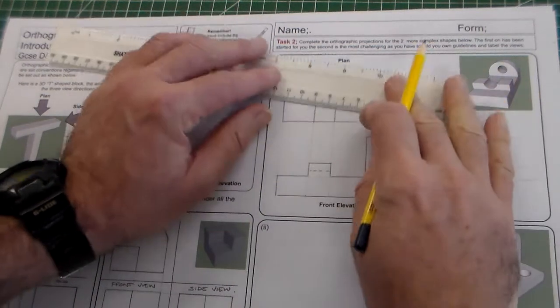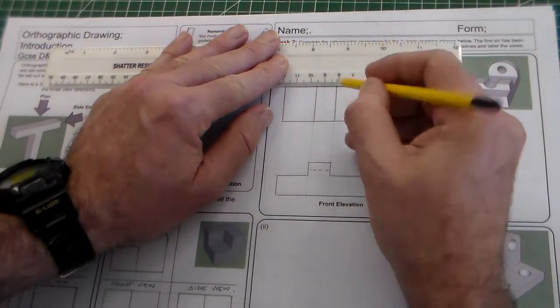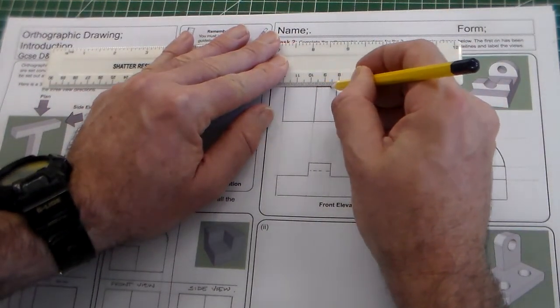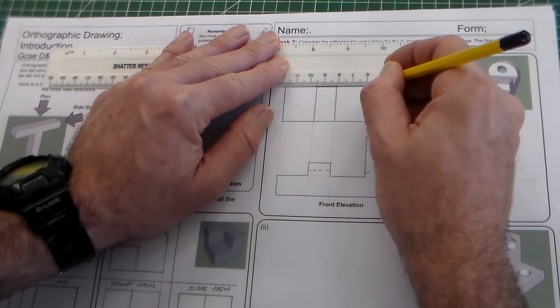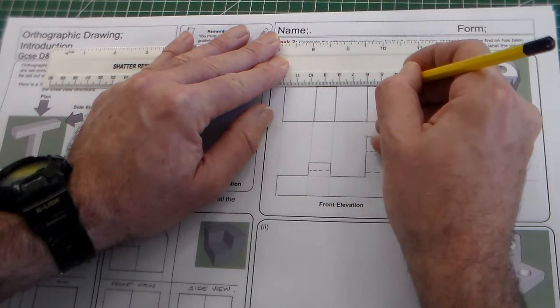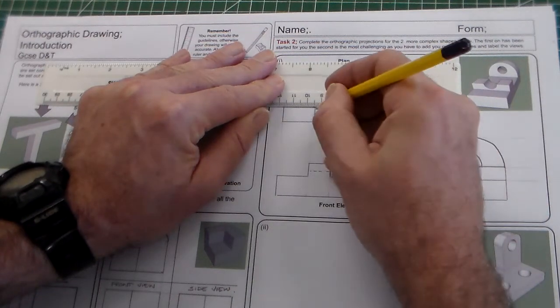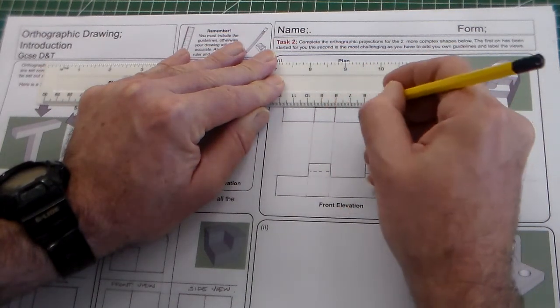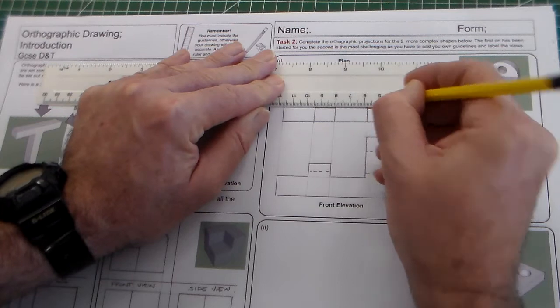And then this cut out detail would be here is a line, there is hidden detail and the same here. So we've got a line here and hidden detail here.